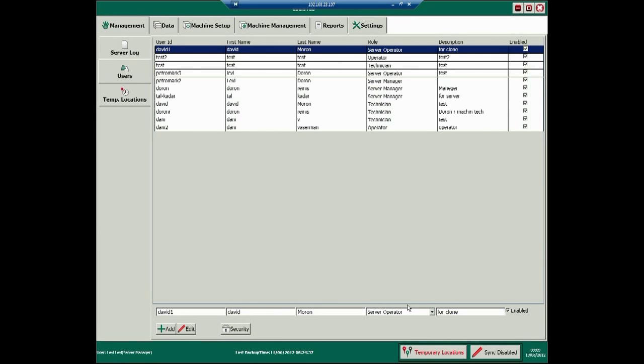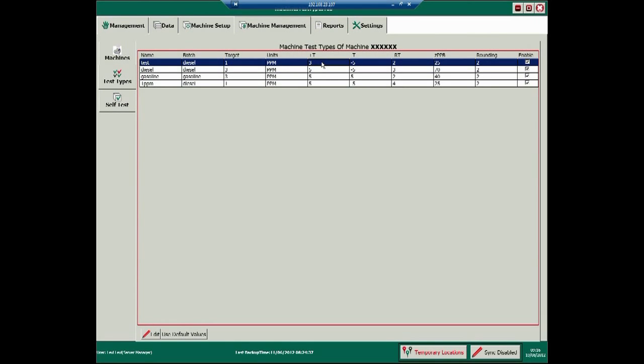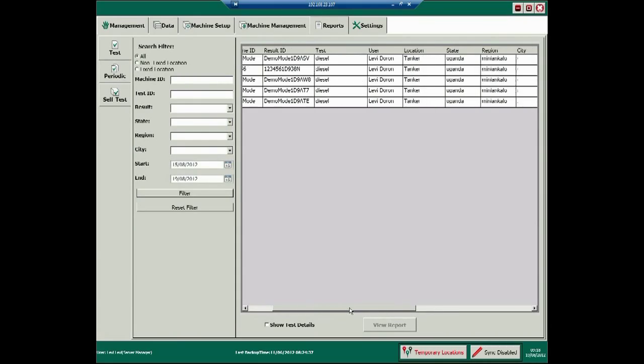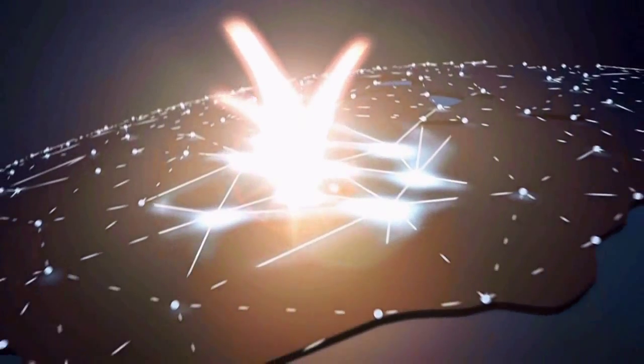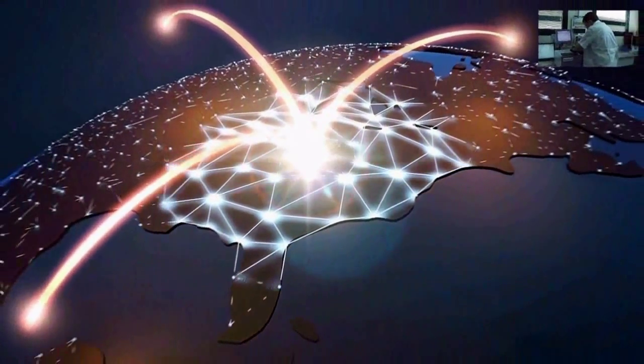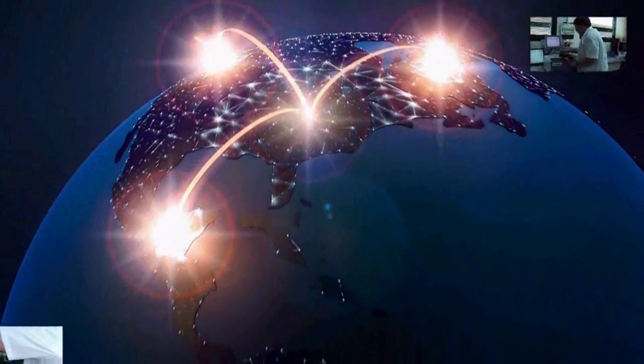The server administrator sets all parameters and specifications, such as users' privileges, type of analytical methods, result criteria for pass and fail, and identifies the analyzer systems with their location. Each change creates an update on every system, making spread operation an easy task.